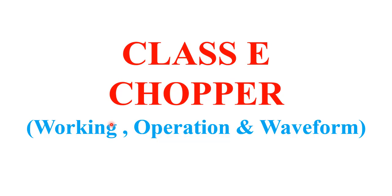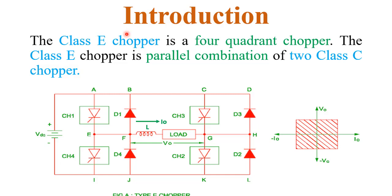Before I discuss class E chopper, in my previous video I have already explained class A, class B, class C, and class D chopper, in which class A and class B have 1-quadrant operation and class C and class D have 2-quadrant operation, whereas class E chopper has all 4-quadrant operation. It is also called the 4-quadrant chopper.